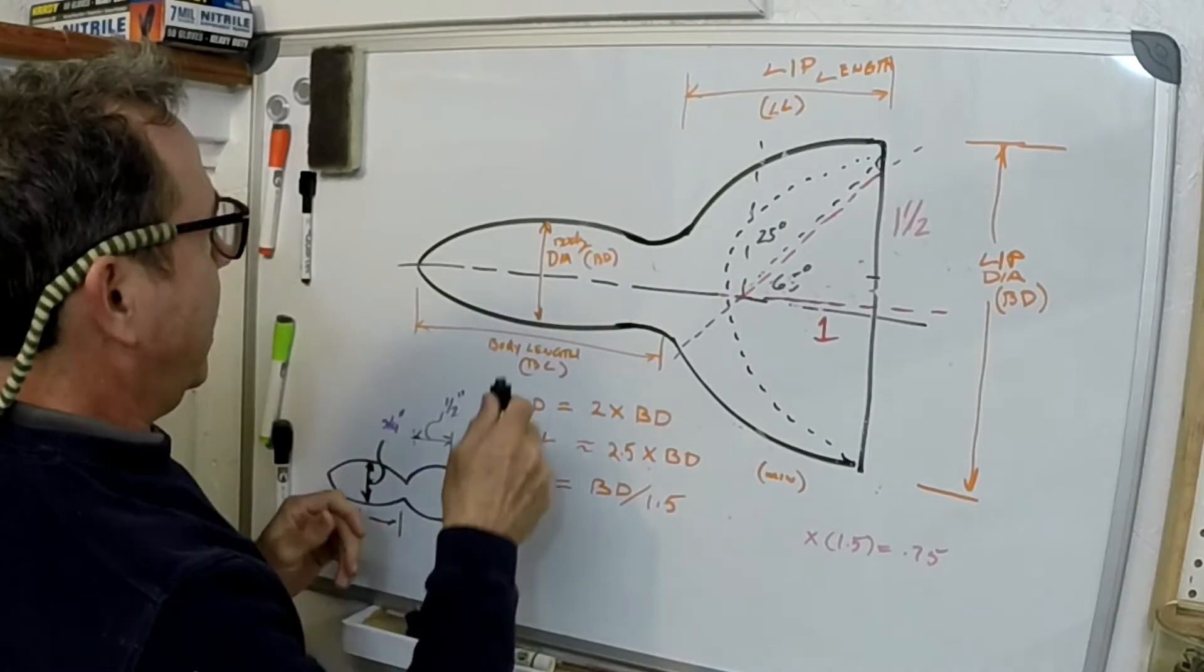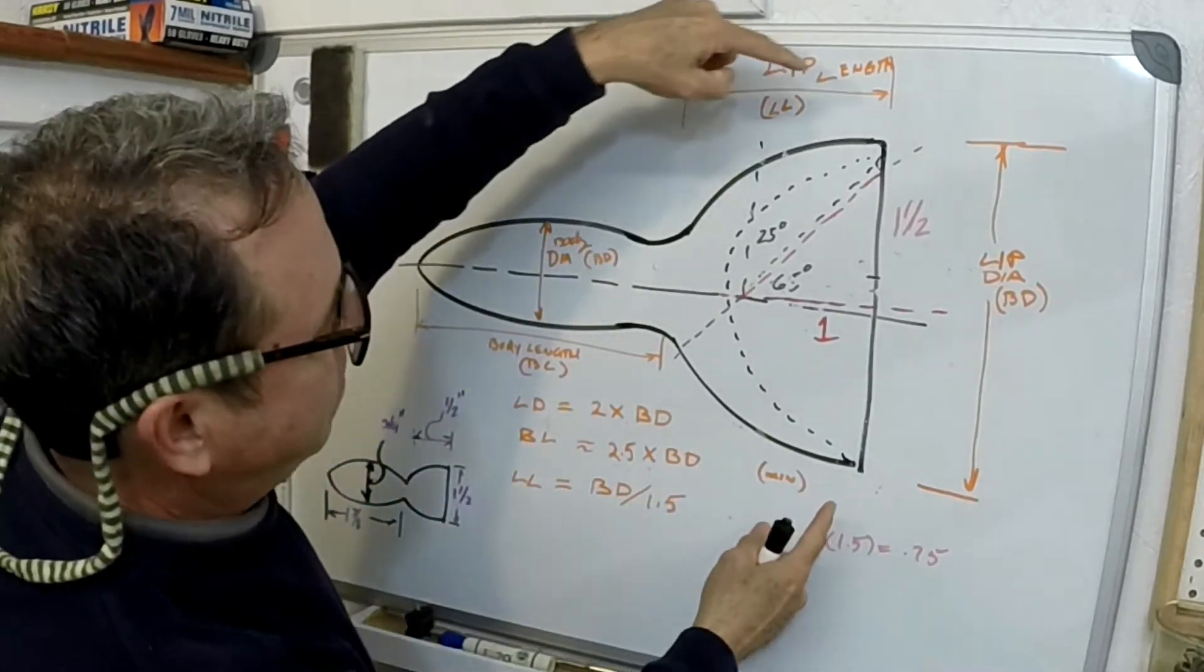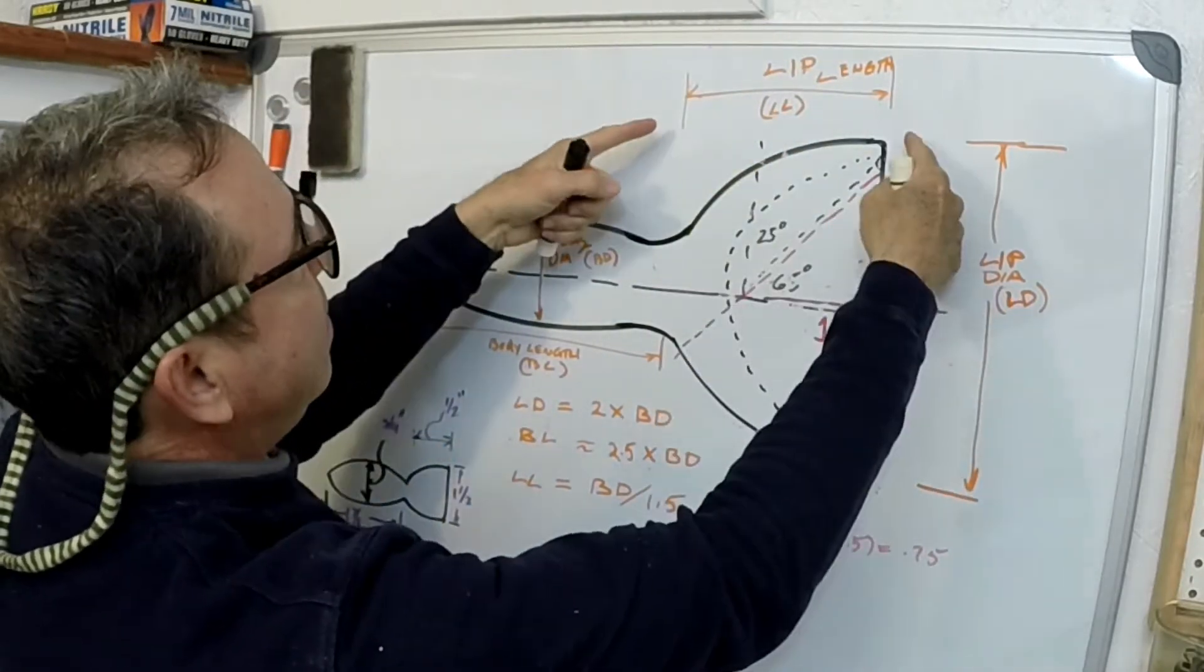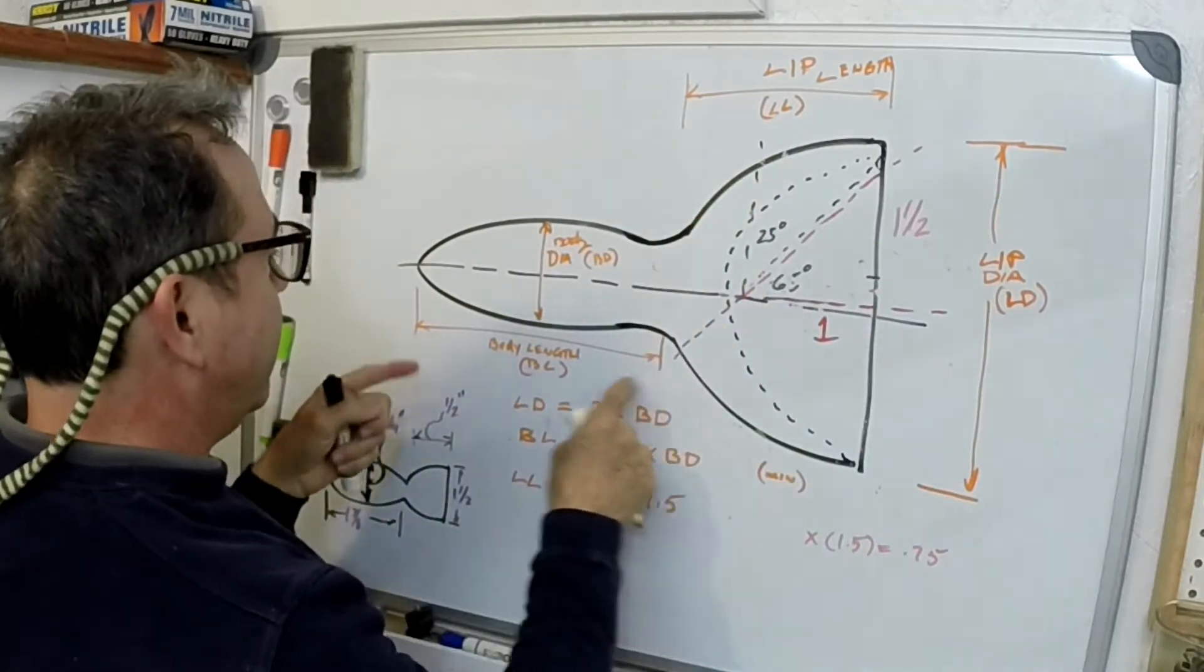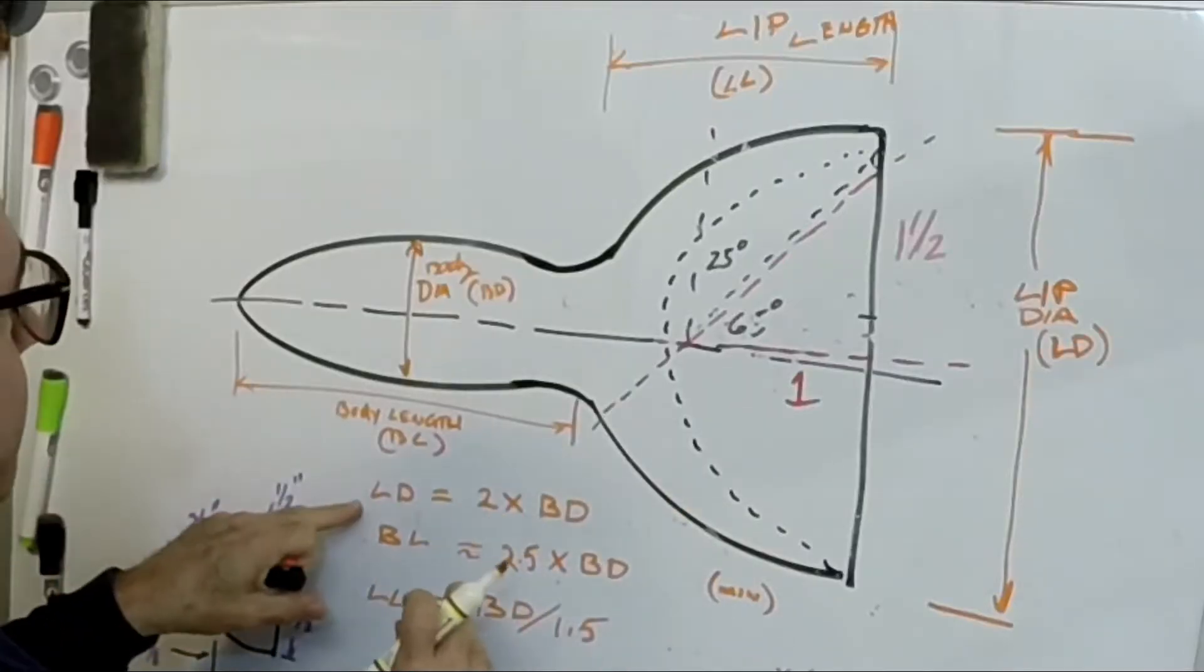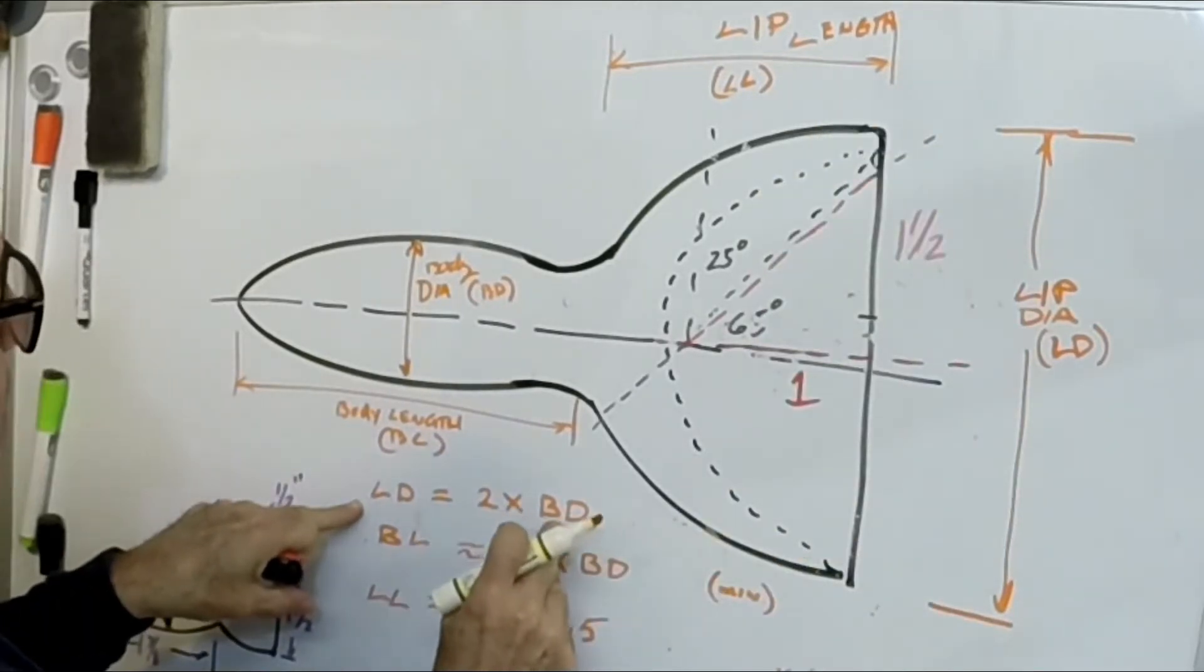So the body diameter is BD, then the lip diameter is LD, the lip length is LL, and the body length is BL. Kind of straightforward. Lip diameter should be twice the body diameter.